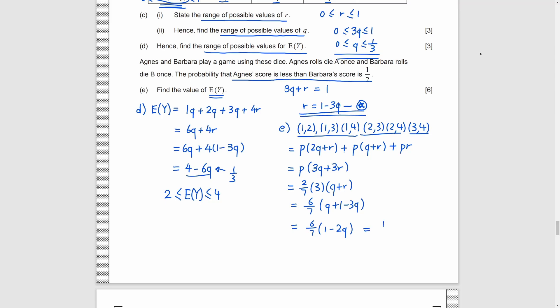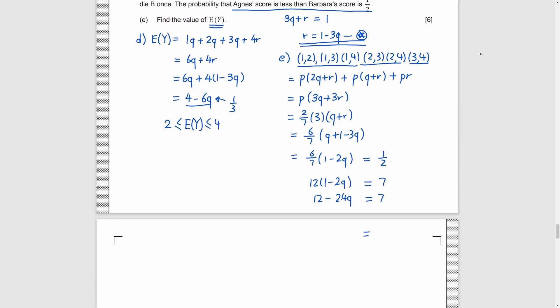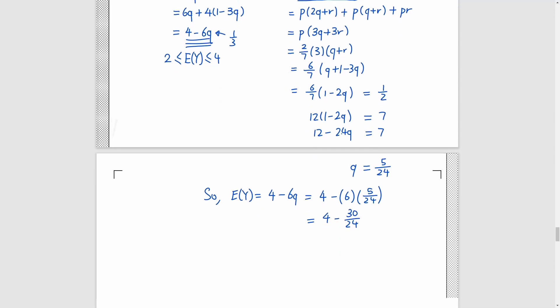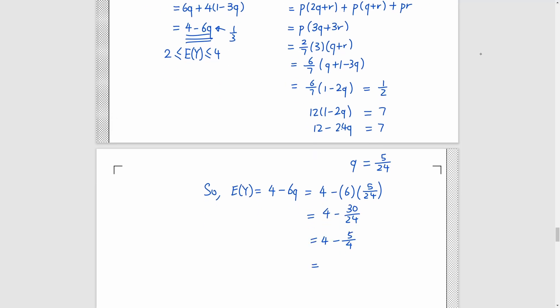This is the expression for the probability that a score is less than b score. And, by the sentence above, we know that it is equal to half. So, we set it to be half and we get our equation. Solve it and we get q equals 5 over 24. So, we can substitute it back to the expected value of y we find in part D. After tons of work, we get 11 over 4.